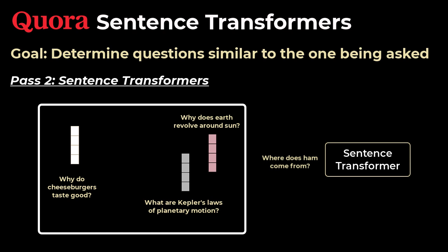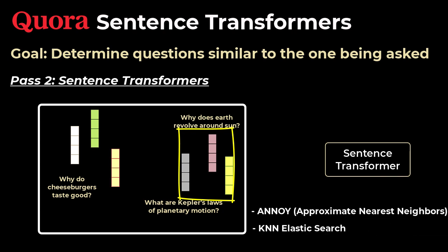In our Quora question setting, we would just pass in every question through the sentence transformer once, and store it somewhere for future use. Then when a new question comes in, we pass only that question through the sentence transformer to get the sentence vector representation. And then determine the questions with the highest cosine similarity, and surface them as related questions. We can find the nearest neighbors through some nearest neighbor techniques. This completes the pass 2 of the explanation.